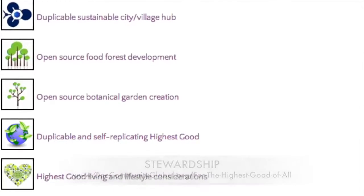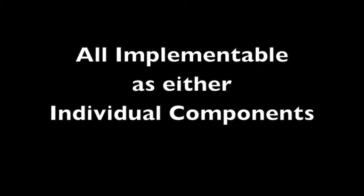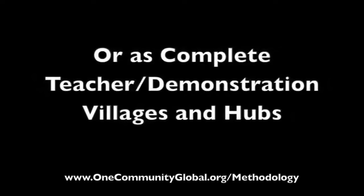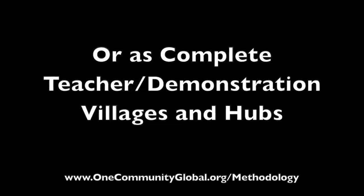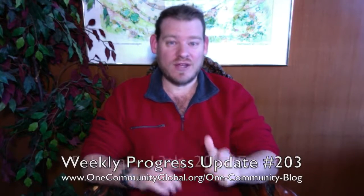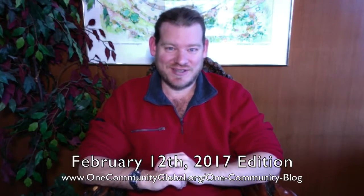This includes highest good approaches to food, energy, housing, education, for-profit and non-profit business creation, society, and true earth stewardship. We are creating all these things to be implementable as either individual components or as complete teacher demonstration villages and hubs. Welcome to the One Community weekly progress update — my name is Jay Stable, executive director of the One Community 501c3 non-profit. This is our weekly progress update number 203, February 12th, 2017 edition.